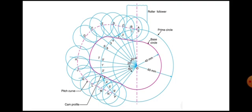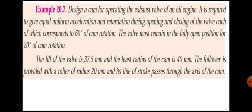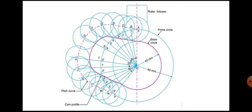Now for the cam profile drawing. First, draw the base circle — the minimum circle — with radius 40 mm. Since we know the radius is 40 mm, and the roller radius is 20 mm, the prime circle radius is 40 plus 20 equals 60 mm. Draw the prime circle. Drop a vertical center line. The cam rotation is divided: 60, 20, and 60 degrees are divided by the vertical line.